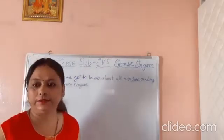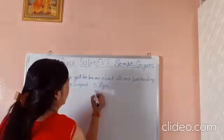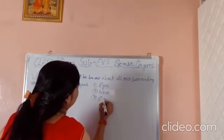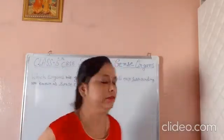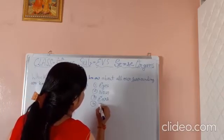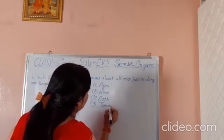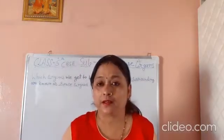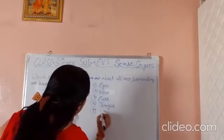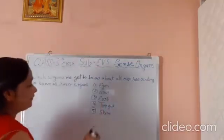These Sense Organs are: first, eyes — eyes help us to see. Second, nose — nose helps us to smell. Third, ears — ears help us with hearing. Fourth, tongue — tongue helps us to taste, we feel different tastes with the tongue. And fifth, skin — skin helps us to touch. So these are the five sense organs.